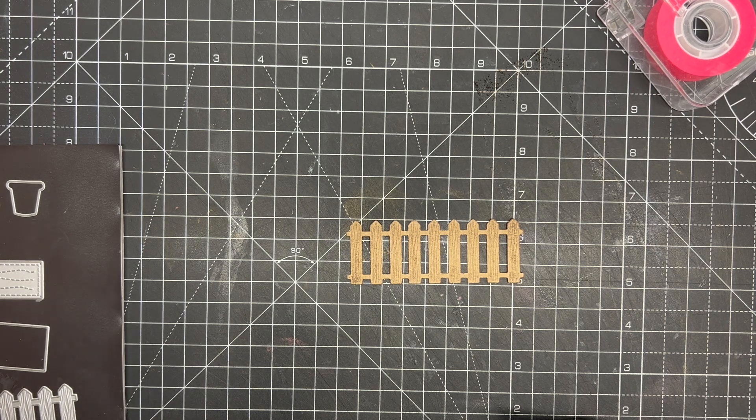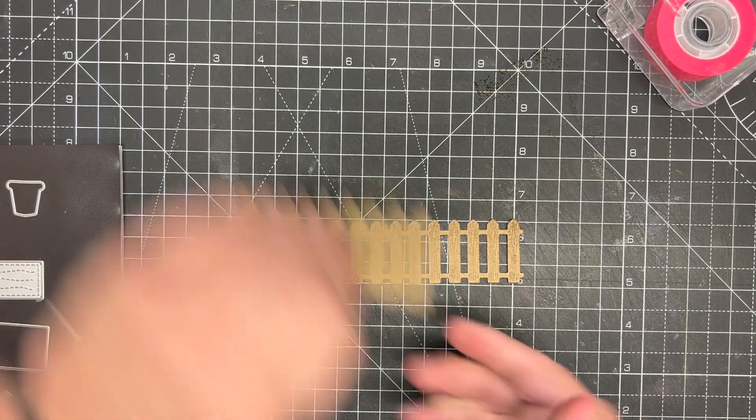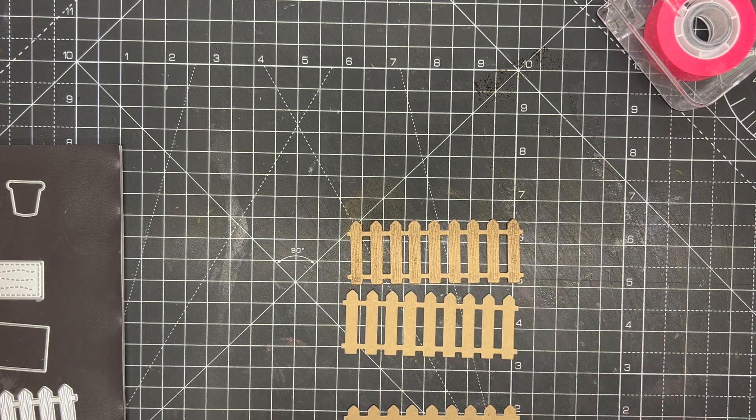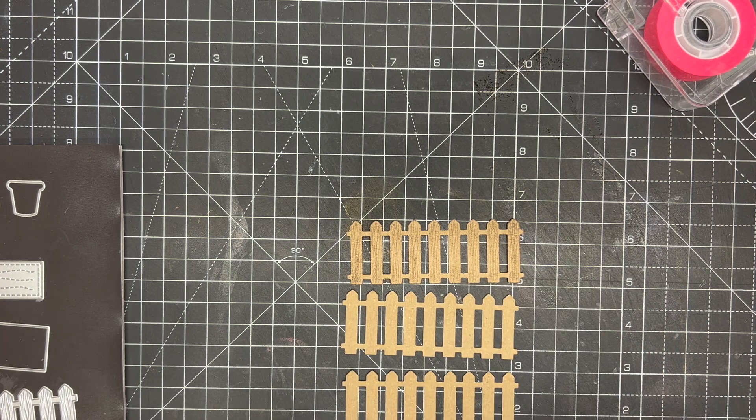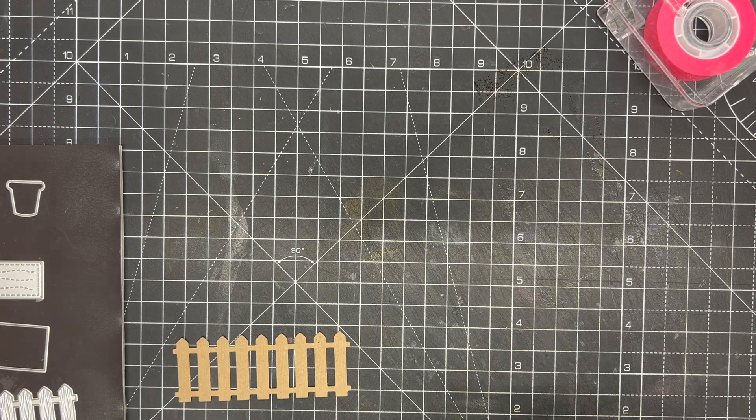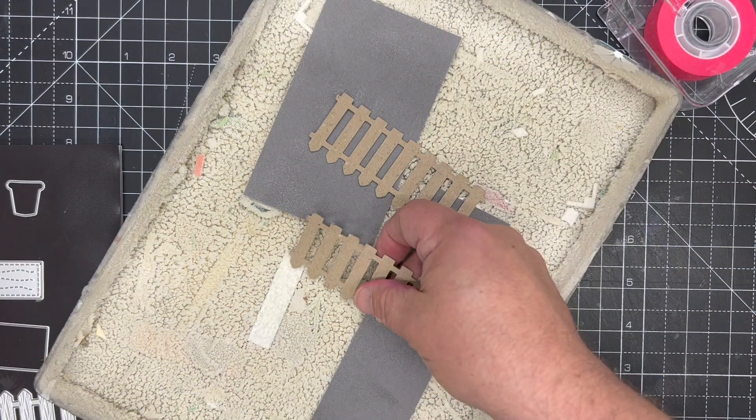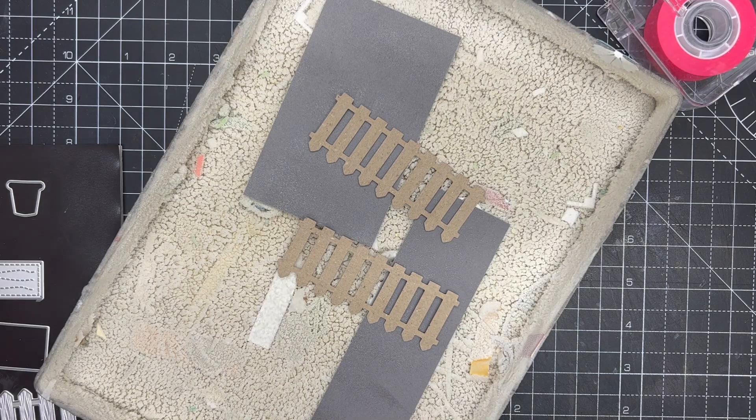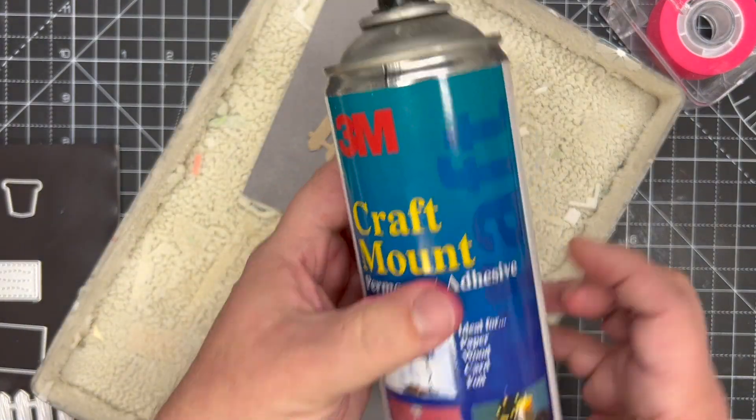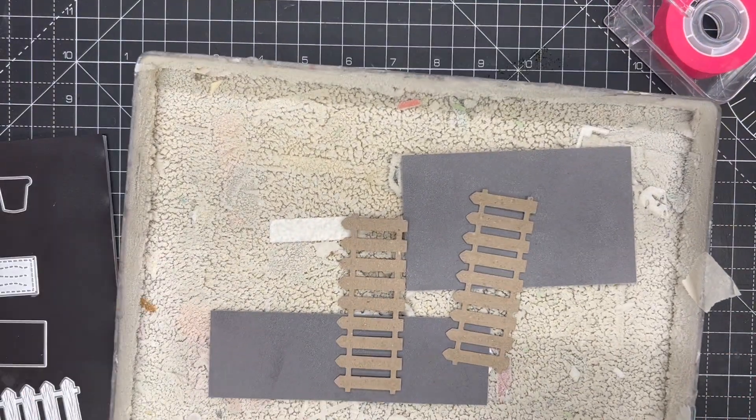So we have our garden fence and what you want to do for this project is actually to cut this twice more without inking it to give you three layers. We take two of these layers, I'm putting them into my spray box.